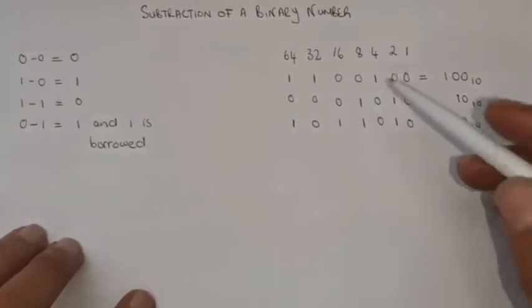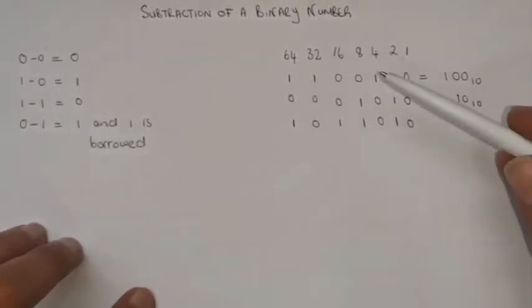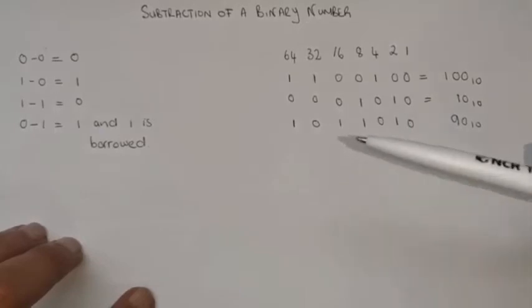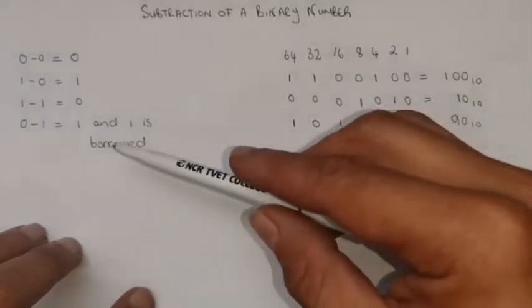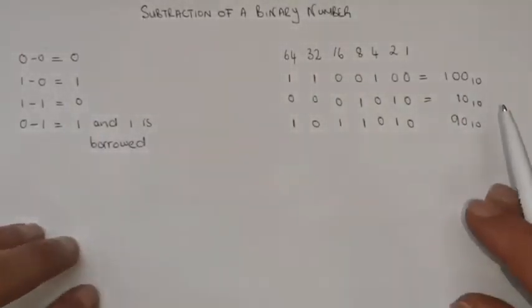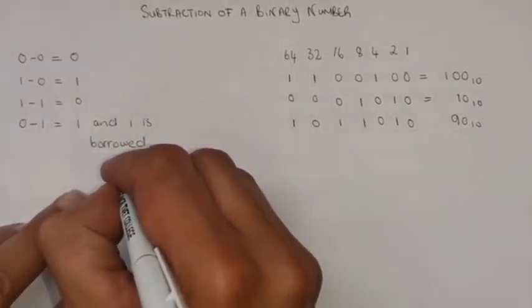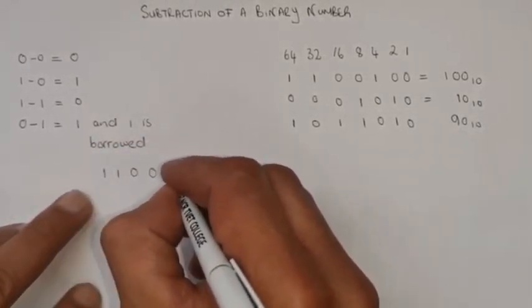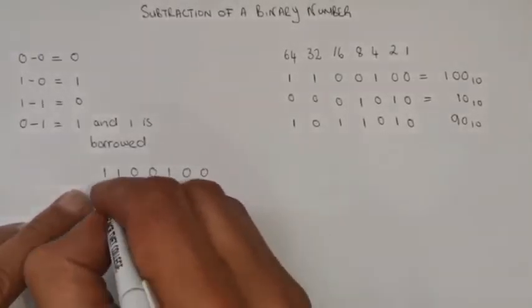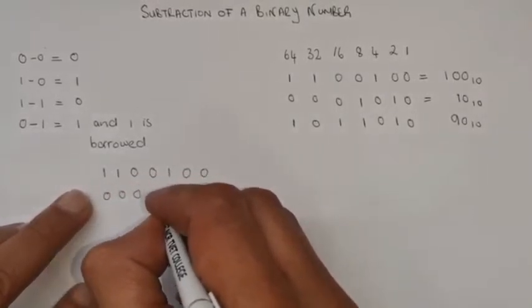I can just write down that answer directly in a test or exam, but I'm going to show you how to actually do the calculation by working through it and using the fourth rule — borrowing. So let me write it down: 1 1 0 0 0 1 0 0 minus 0 0 0 0 1 0 1 0.